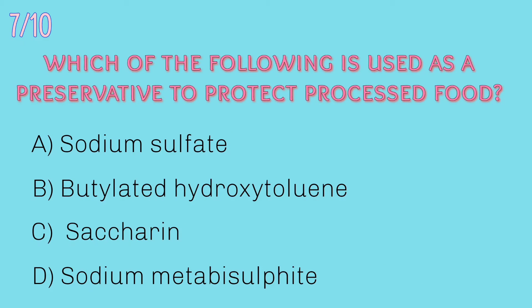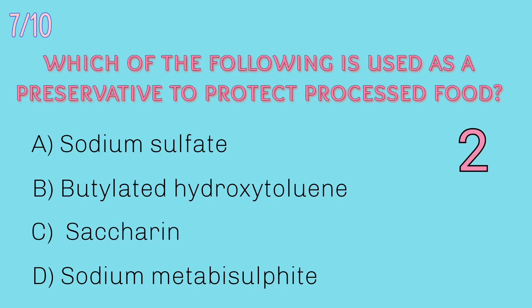Seventh question: which of the following is used as a preservative to protect processed food? — Sodium sulphate, butylated hydroxy toluene, saccharine, or sodium metabisulphate? Answer: Sodium metabisulphate. Sodium metabisulphate is used as a preservative to protect processed food.